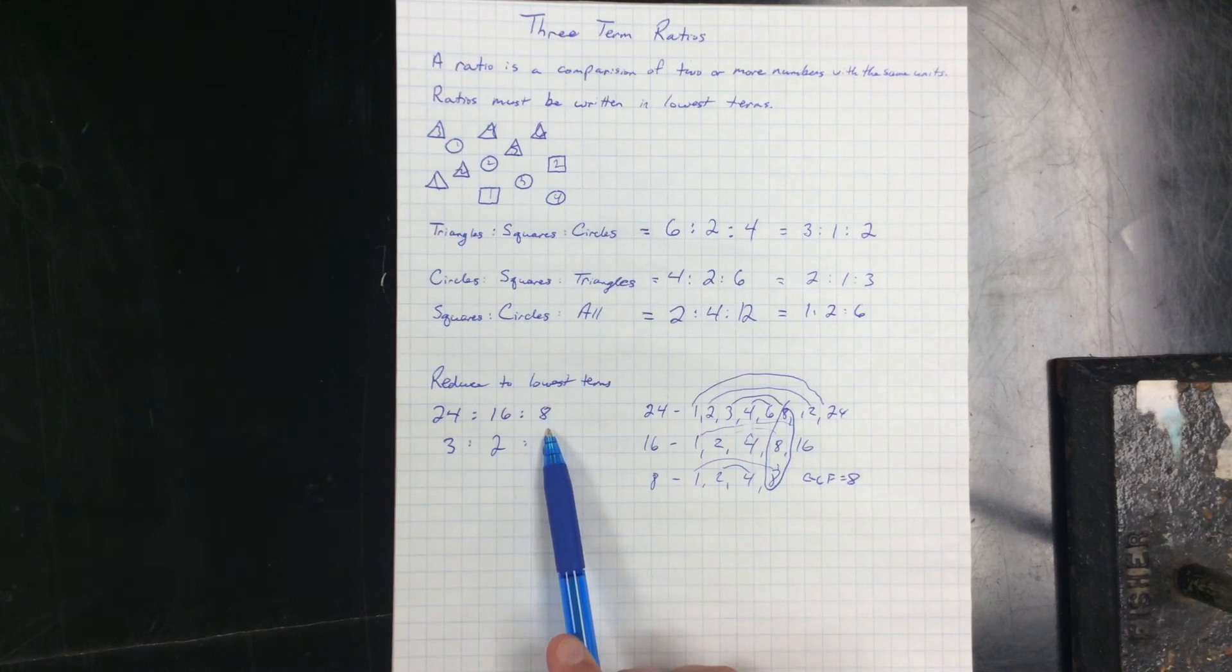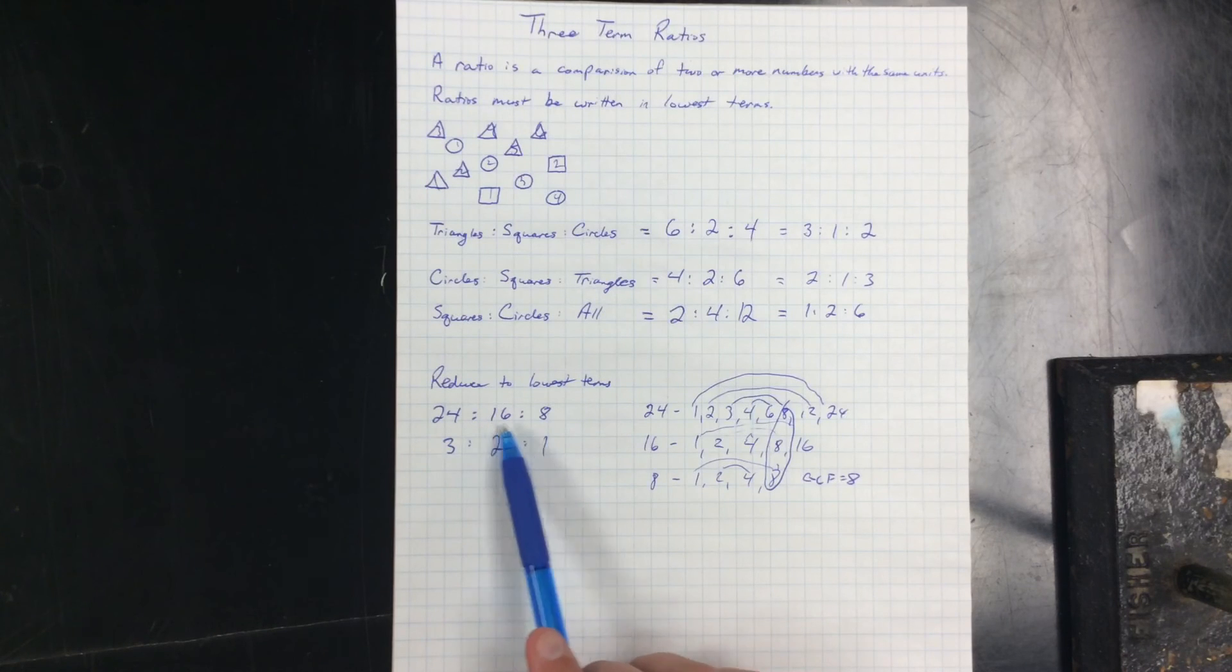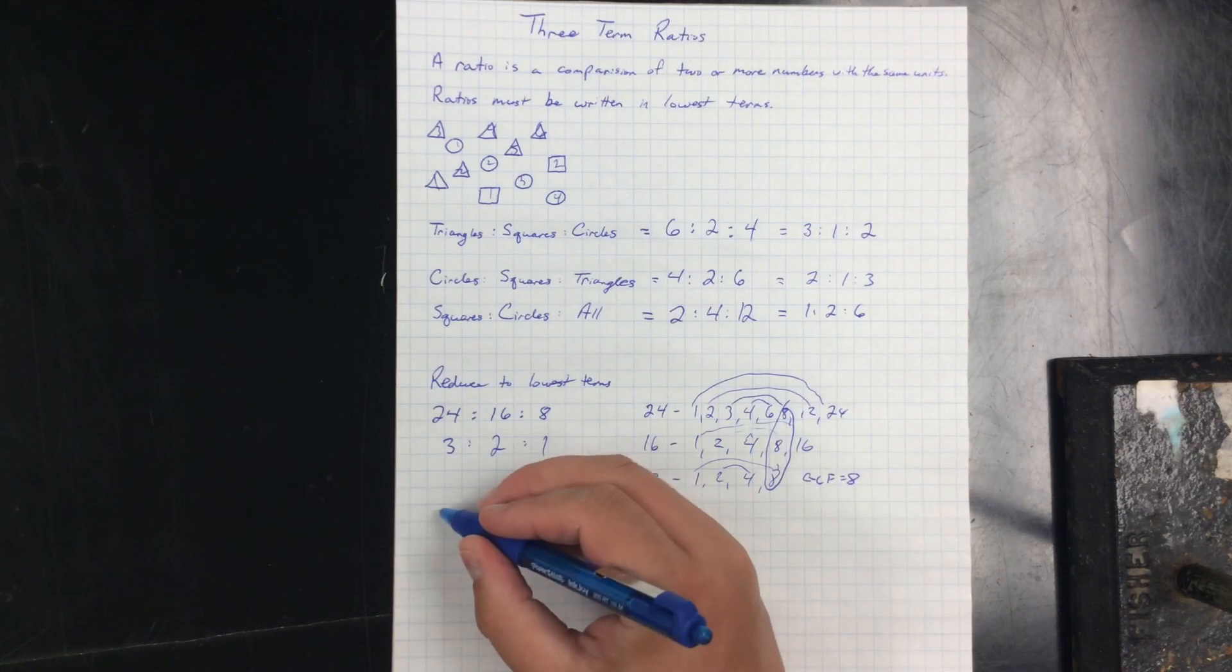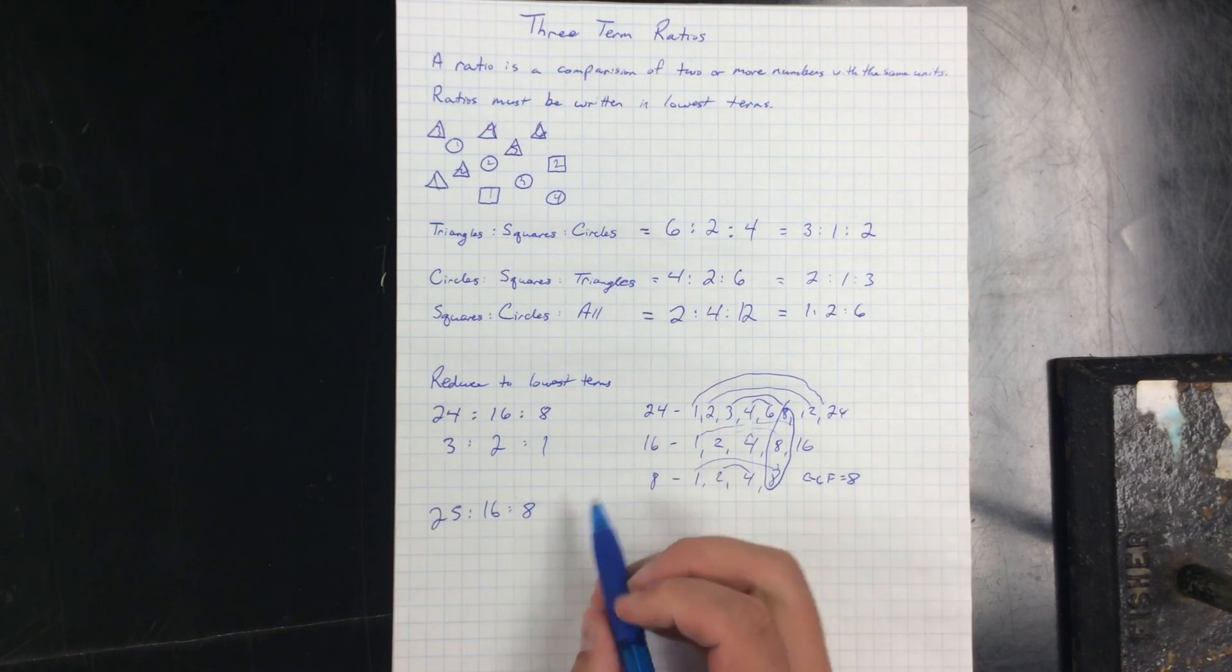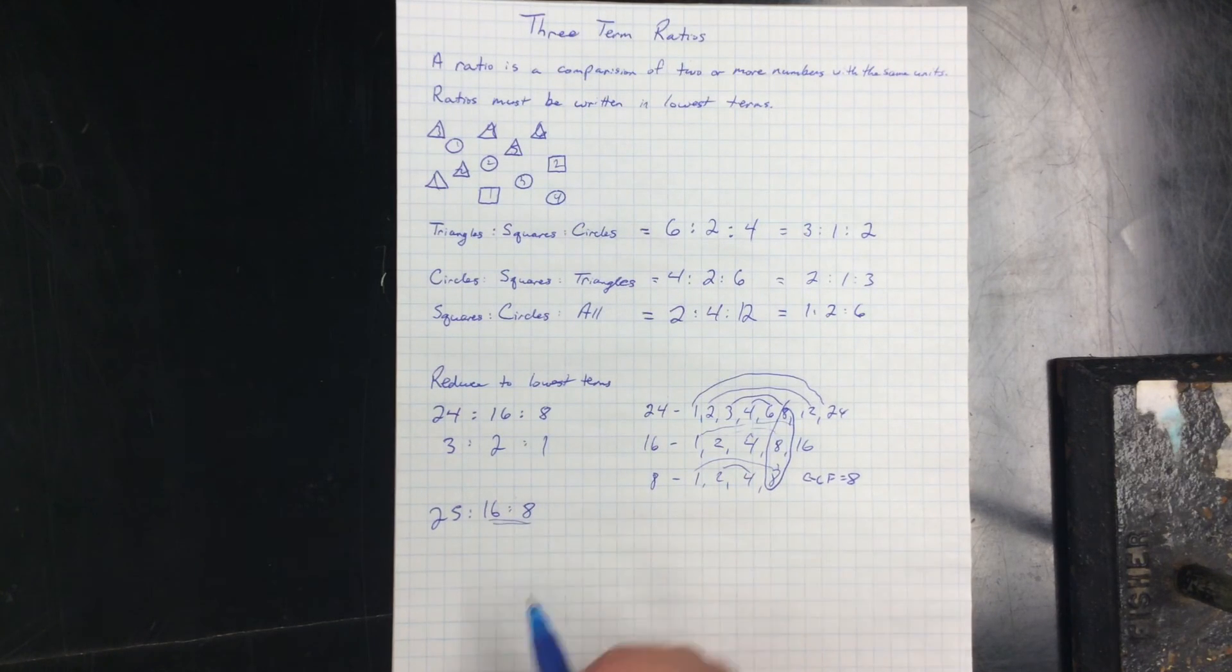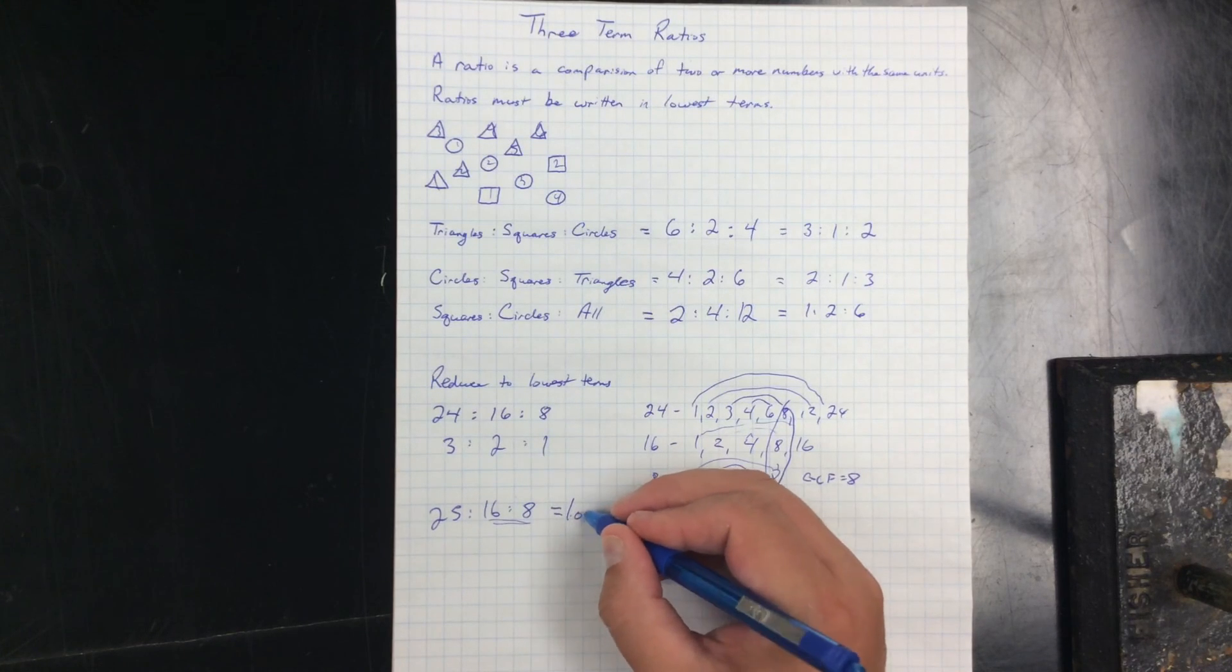With three-term ratios, when we're dividing it out to find lowest terms, we have to make sure that it's a factor for all three terms and not just two of them. So 25 to 16 to 8, there's a common factor for these two, but not for the third. So this is already in lowest terms.